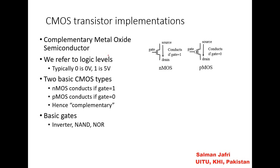What are the implementations of CMOS structures? It is complementary metal oxide semiconductor like I stated before. We will refer to logic level 0 as 0 volt and 1 as 5 volts. Two flavors are there: NMOS and PMOS. NMOS conducts if gate equals 1. If we apply 1 to the gate, the NMOS conducts, and PMOS conducts if gate is 0. Hence we have the complementary.